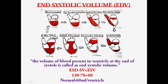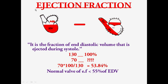The next topic is end systolic volume. During systole, the ventricle ejects blood — the right ventricle into the pulmonary artery and the left ventricle into the aorta. This ejected blood is the stroke volume. After ejection, some blood still remains in the ventricle — that is called end systolic volume. So end systolic volume equals end diastolic volume minus stroke volume: 130 minus 70 equals 60 ml per ventricle.